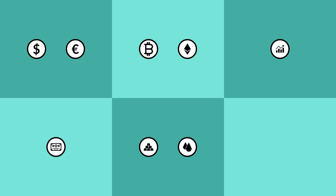Bonds that originate from entities and represent debt. Commodities that originate in the physical world, like gold. And real estate, or ownership stake in physical world property.